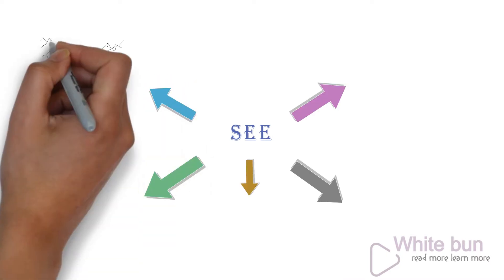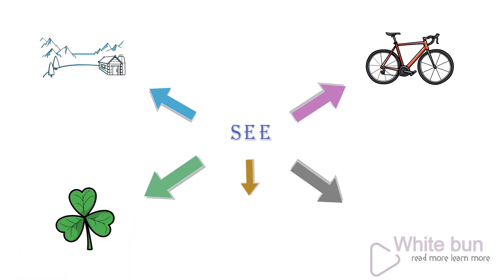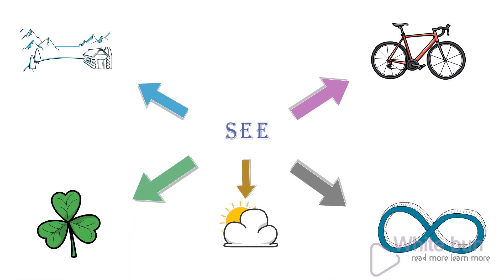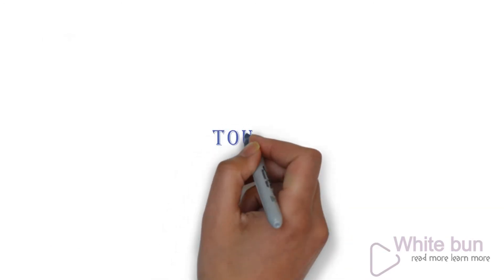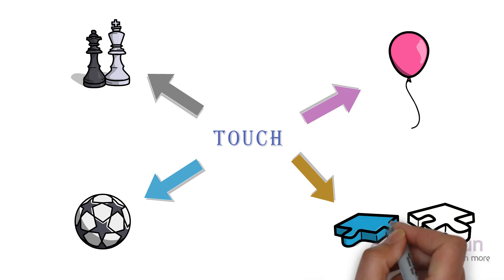You can see - any 5 things which you can see, focus on them and see them one after one. You can touch - any 4 things, touch them and try to understand their structure and texture.